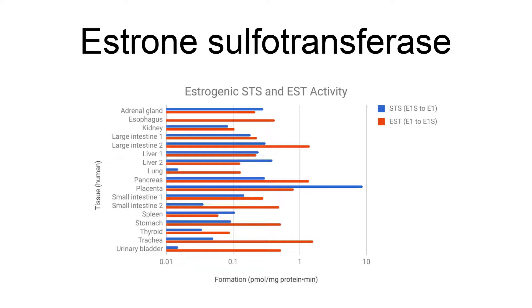Estrone sulfotransferase, EST, EC 2.8.2.4, also known as estrogen sulfotransferase, is an enzyme that catalyzes the transformation of an unconjugated estrogen like estrone into a sulfated estrogen like estrone sulfate.